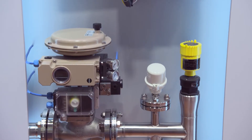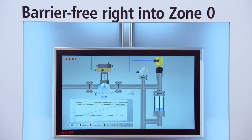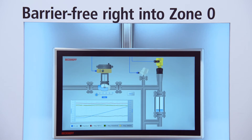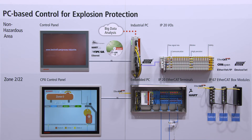With a goal to directly implement process automation-based systems into the standard automation architecture, we presented ELX terminals at the Hannover Fair in April. ELX terminals enable the direct connection of intrinsically safe field devices into our standard automation architecture. Besides that, we presented the CPX panel, which allows the control and visualization of process data directly in zone 2 or 22.